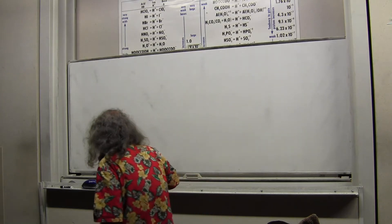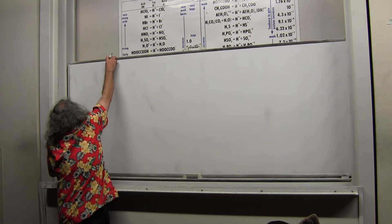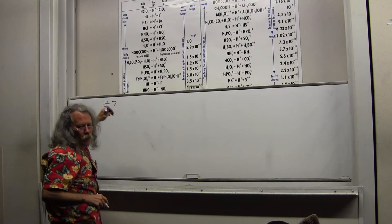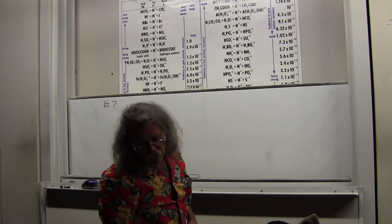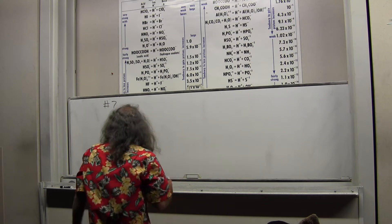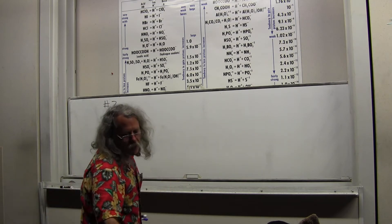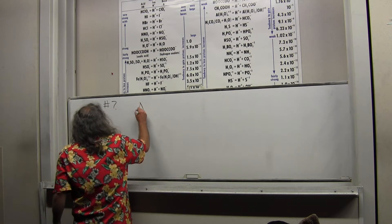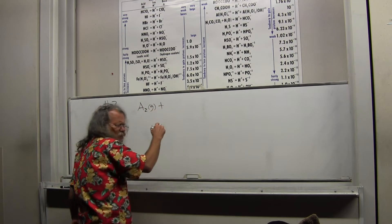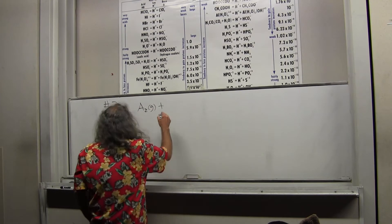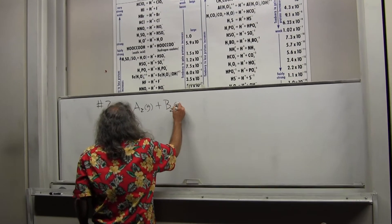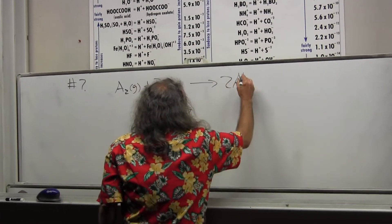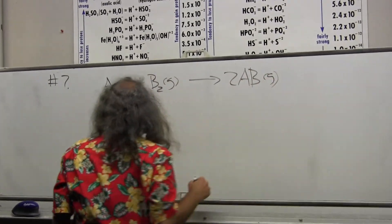Problem number seven. In the kinetic investigation of the following reaction, I'm just going to start the reaction here: A2 gas plus B2 gas goes to 2AB gas. It's a gas phase reaction.